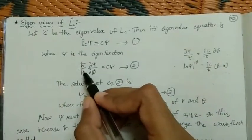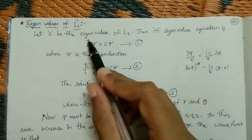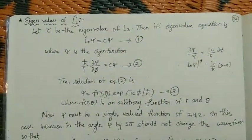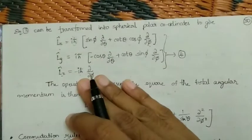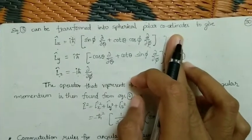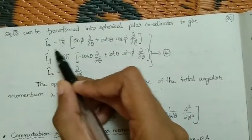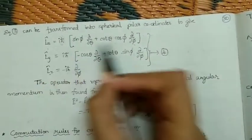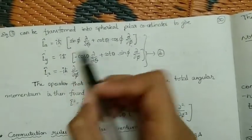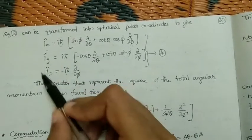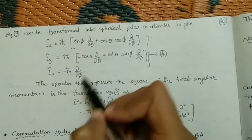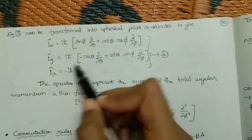As we know, Lz is nothing but minus i-h-bar times d/d-phi. In terms of the spherical polar coordinate system, we have formulas for Lx and Ly as well, and finally the formula for Lz is minus i-h-bar times d/d-phi.